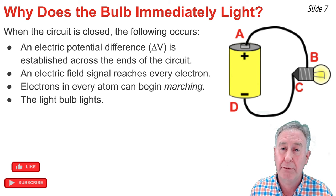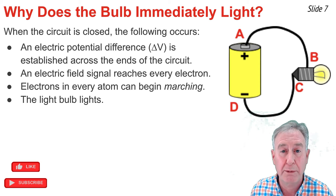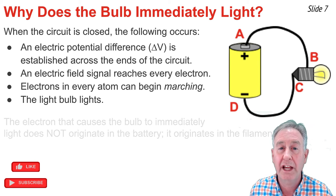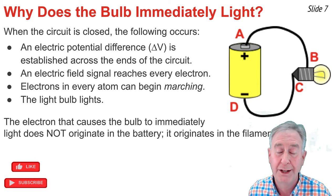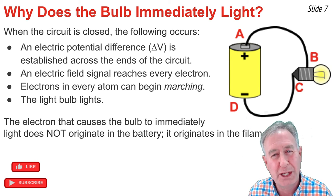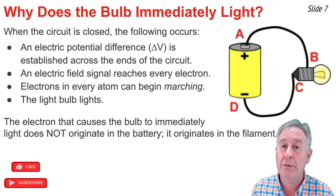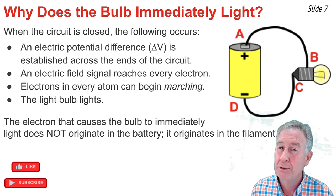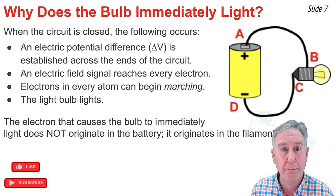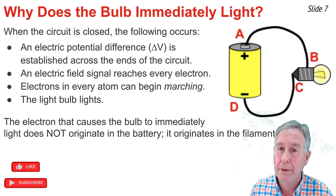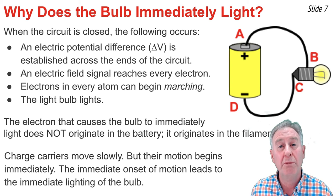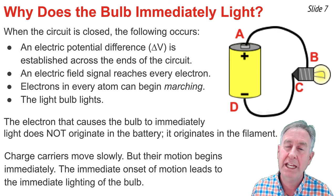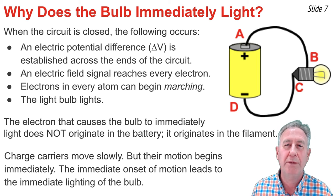There's no perceptible time delay between when you close the circuit and you observe that the light bulb is lighting. The electrons that are lighting the bulb are not coming from the battery. They don't have to move from location A to location B for the bulb to light, nor from location D to location C. The electrons that are lighting the bulb are the electrons that are in the filament. 20 minutes later, perhaps, the electrons lighting the bulb might be the ones that started in the cell of this circuit, but the electrons that immediately light the bulb are the ones located within the bulb itself.